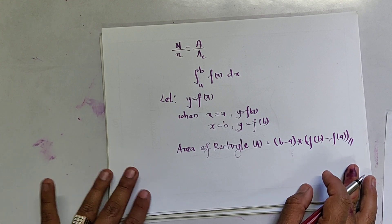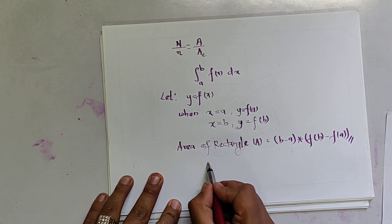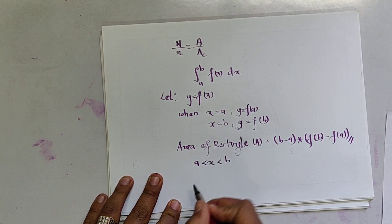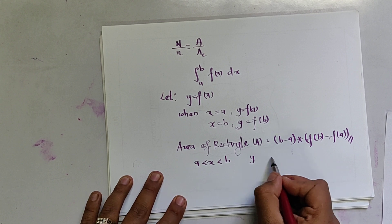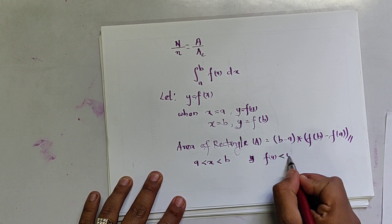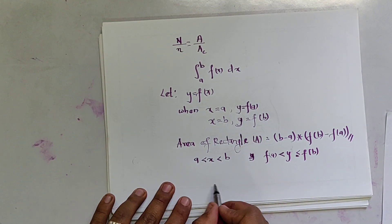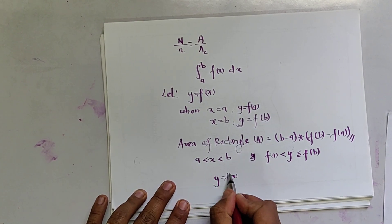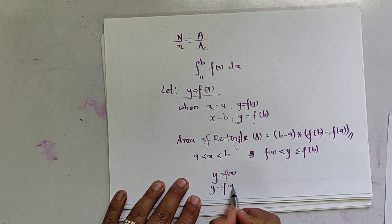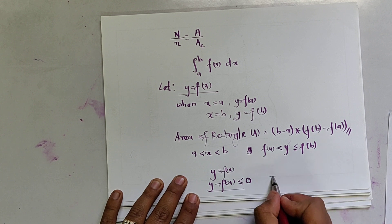We have to find the boundary condition to solve it using the Monte Carlo method. The boundary condition is: x is between a and b, and y is between f(a) and f(b). The curve equation is y equals f(x), so the boundary condition is: y minus f(x) is less than or equal to 0. If this is true, the point is inside the region; otherwise it is outside.